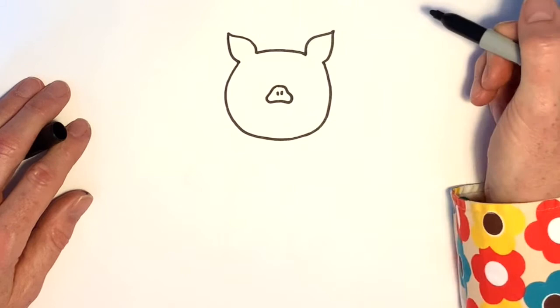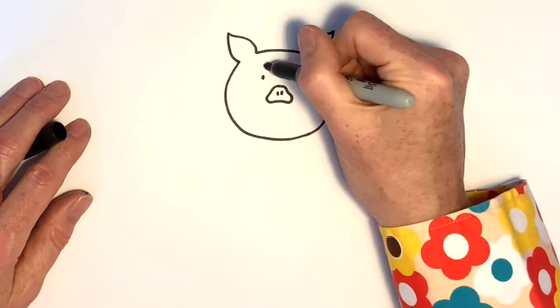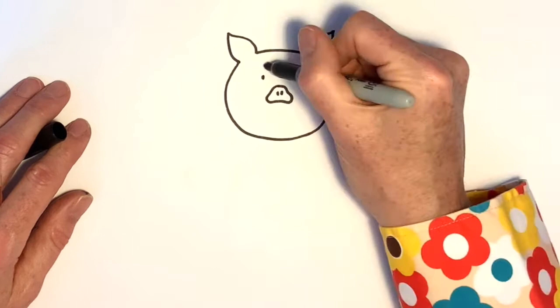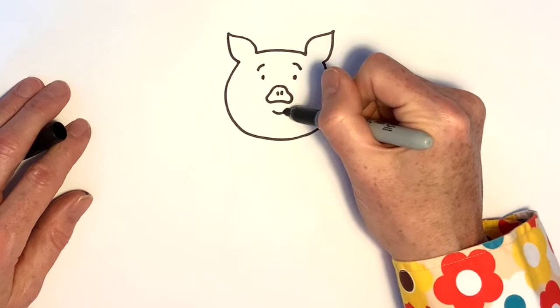Two nostrils in the nose, two dots for eyes and some eyebrows. And a little smiley mouth, there we go.